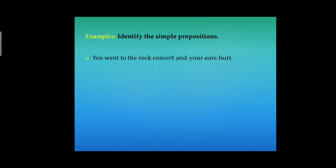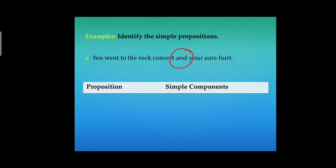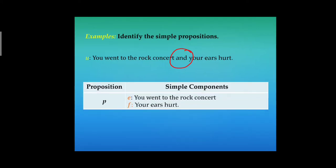Moving on to our third example: 'You went to the rock concert and your ears hurt.' Again, we use the connective word 'and.' Our first proposition E is: you went to the rock concert. And the second proposition F is: your ears hurt.